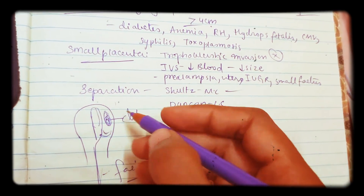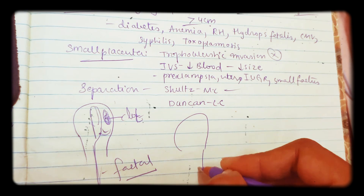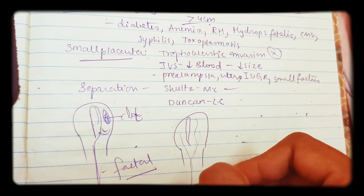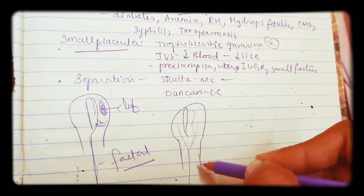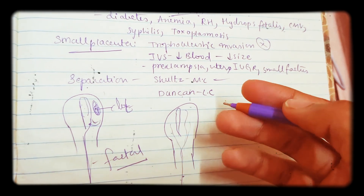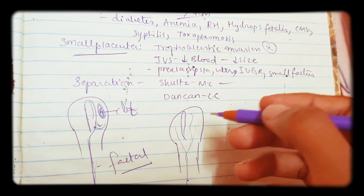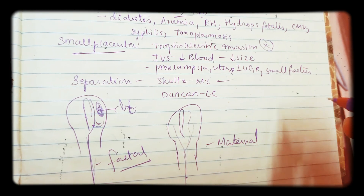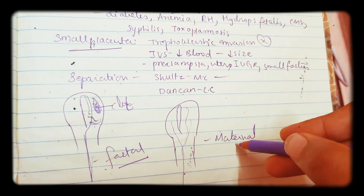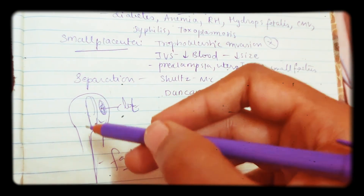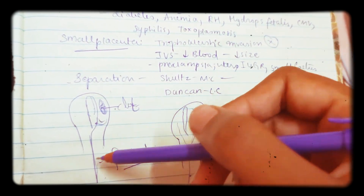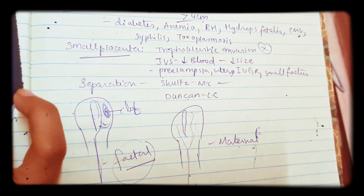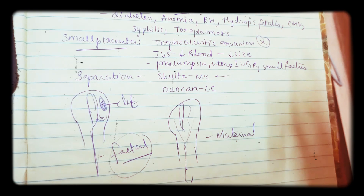In Duncan type, the placenta is peripherally attached. Because of this peripheral attachment there is a lot of bleeding. This is the less common type. Here you will get the maternal side of the placenta — the reddish dull-colored side — coming out first, and there is a lot of bleeding associated with it.